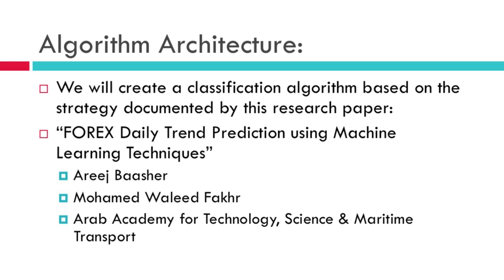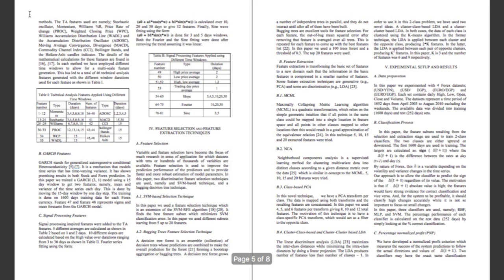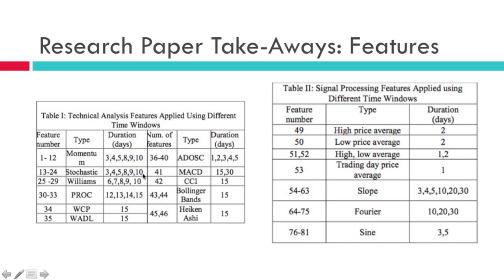Let's talk about the algorithm architecture. We're going to make a classification algorithm based on a research paper I found online. I don't want anyone to think I figured this out all by myself — I found it in the public domain. It's called 'Forex Daily Trend Prediction Using Machine Learning Algorithms,' written by Arij Bashar and Mohamed Waleed Fakir at the Arab Academy for Science, Technology, and Maritime Transport. Here is a quick overview of that research paper — I'll link it in the description. Read this before you continue. We're going to be focusing primarily on two tables in the paper, which are the primary takeaways and list the features.